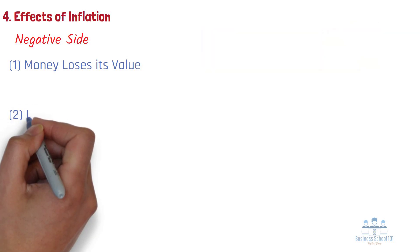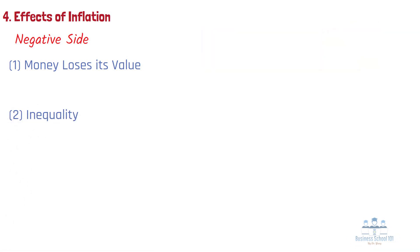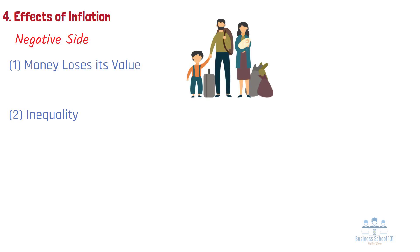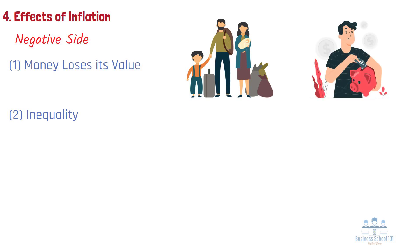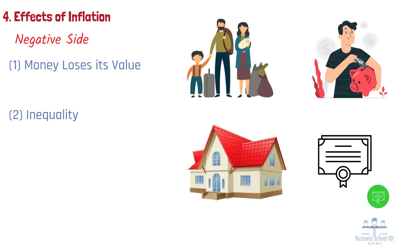Number 2, Inequality. Inflation can predominantly hurt low-income households. Price increases usually take up more of their income and further reduce their savings. Therefore, they have less chance to invest in assets such as housing and stocks to outstrip inflation. In contrast, the rich could still use their extra income to own more assets, which leads to a higher level of inequality.